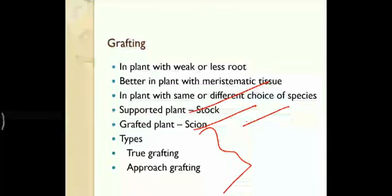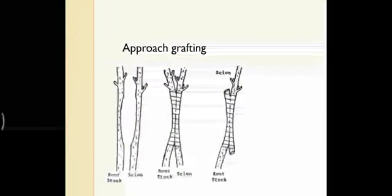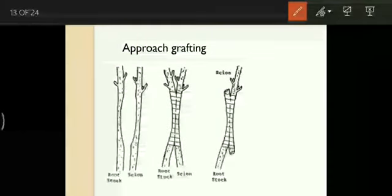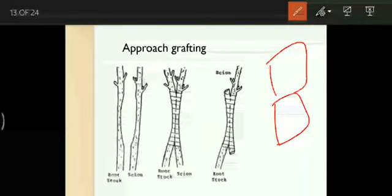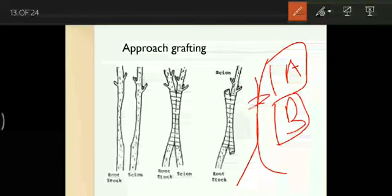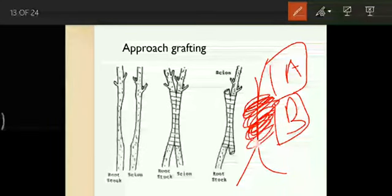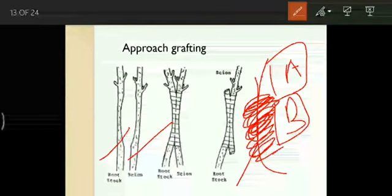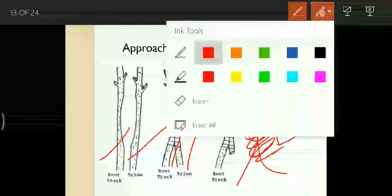There are two main types: approach grafting and true grafting. In approach grafting, we do not implant one onto the other directly; instead, we bring the two plants close together and allow them to grow joined side by side — just approaching each other. This works because of xylem, secondary xylem, secondary phloem, cork, and cambium. Because of the vascular cambium, it will not work in hardwood — it will only work in green stem plants.